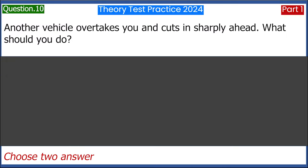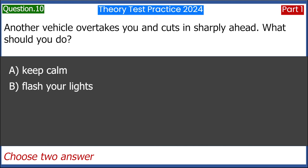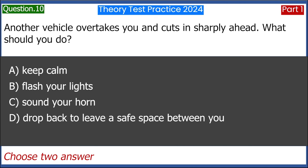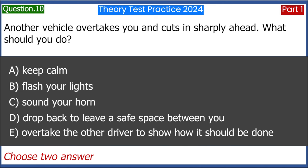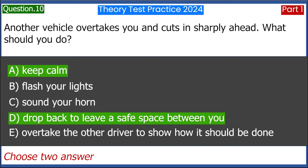Another vehicle overtakes you and cuts in sharply ahead. What should you do? A. Keep calm. B. Flash your lights. C. Sound your horn. D. Drop back to leave a safe space between you. E. Overtake the other driver to show how it should be done. Answer: A and D.